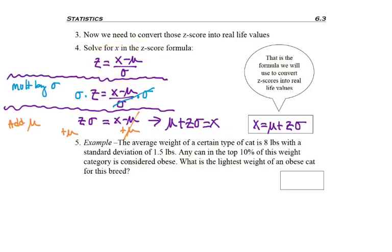But here is an example. The average weight of a certain type of cat is 8 lbs with a standard deviation of 1.5 lbs. Any cat in the top 10% of this weight category is considered obese.